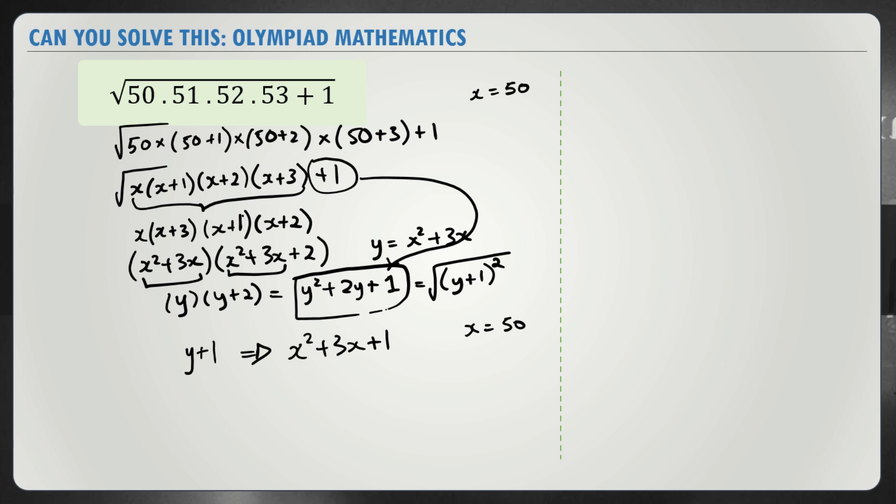So substitute here 50 squared plus 3 into 50 plus 1. And 50 squared happens to be 2,500 plus 150 plus 1, which gives me 2,651. And that's your solution.